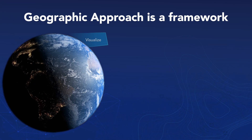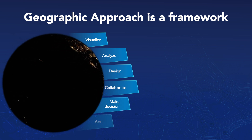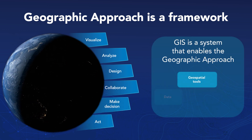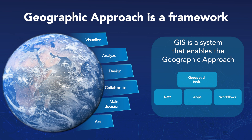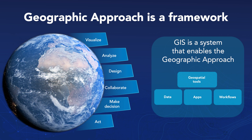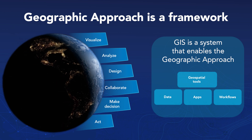Before diving into each aspect, let's clarify some terminology. The geographic approach is a way of thinking and problem solving that integrates data by location. GIS, which stands for geographic information system, is an IT system with digital tools that creates, manages, maps, and analyzes all types of data. GIS is what you will use to implement the geographic approach. Lastly, geospatial tools are specific software products in GIS that help users finish a series of tasks such as collecting data or modeling scenarios.